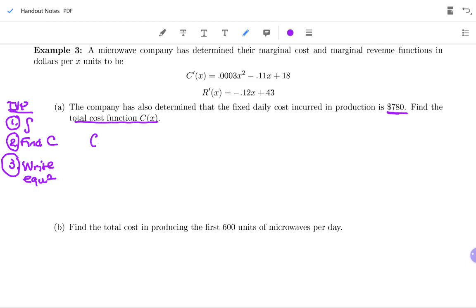So C of x, what we're trying to find, the total cost given the derivative C prime, marginal cost. We're going to first take the antiderivative, and so we have 0.0003x squared minus 0.11x plus 18. All I'm doing is copying down this C prime of x down here because we're going to take the antiderivative of it, so I need a dx on here. And this is my first step, and I'm ready to integrate.